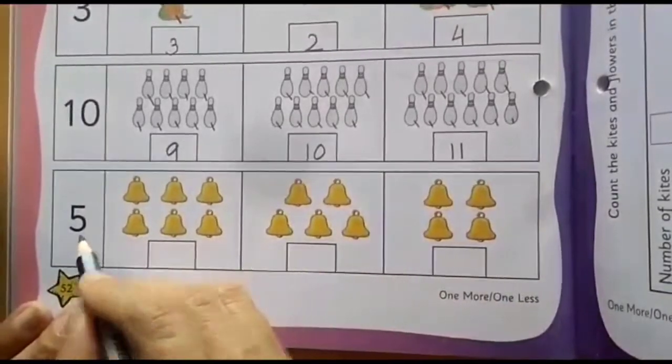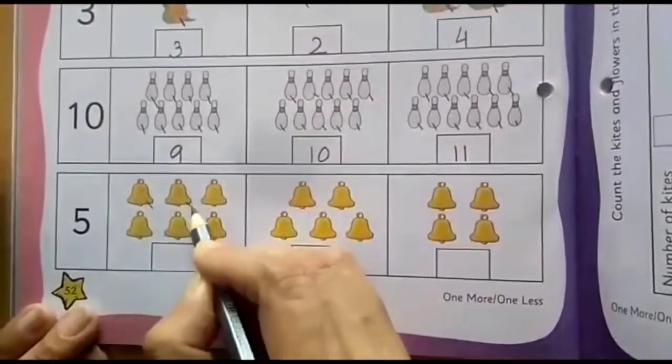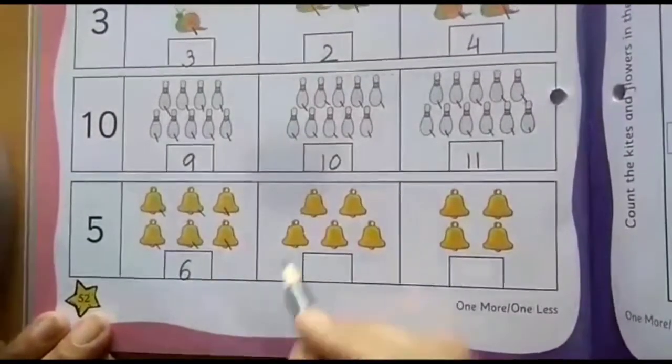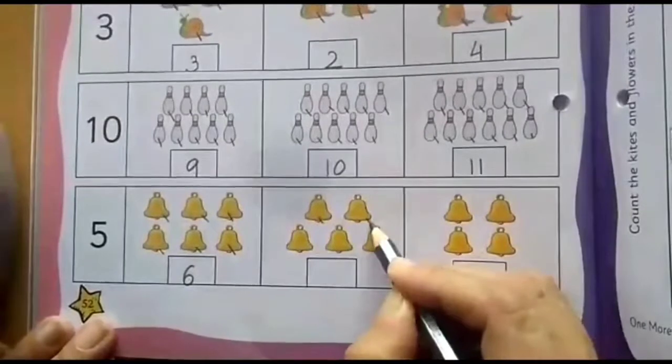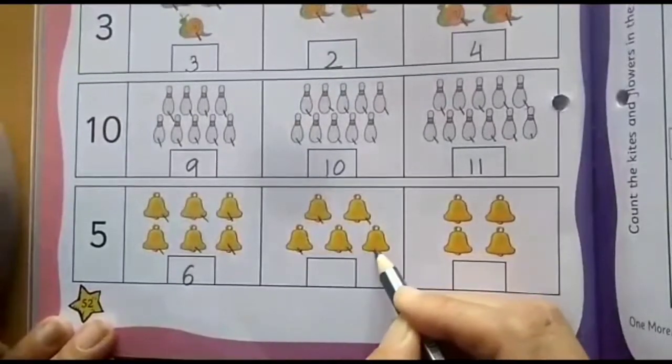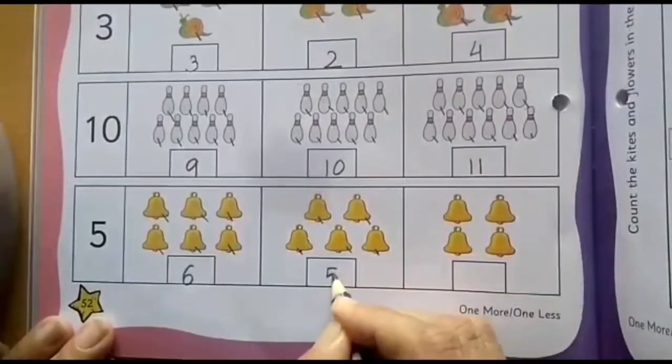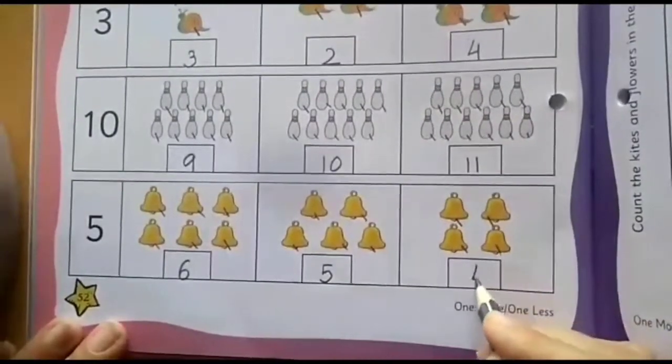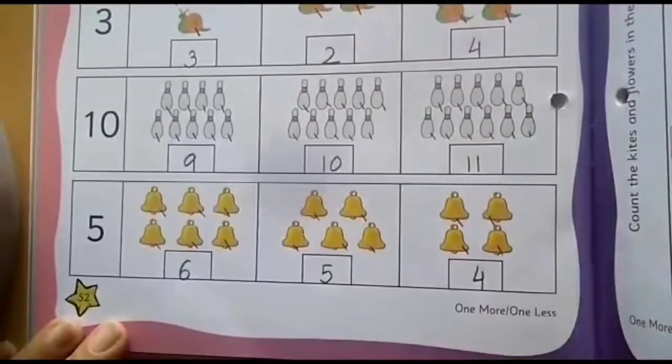Number 5. Let's count. 1, 2, 3, 4, 5, 6. So, here number 6 will come. 1, 2, 3, 4, 5. So, here number 5 will come. Here, 1, 2, 3, and 4. So, done with the counting part.